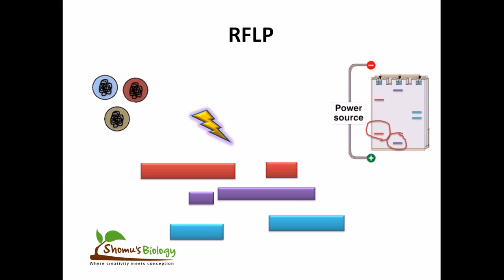That is base pair deletion, inversion, transversion, or translocation. By looking at it we can tell which individual we are talking about.